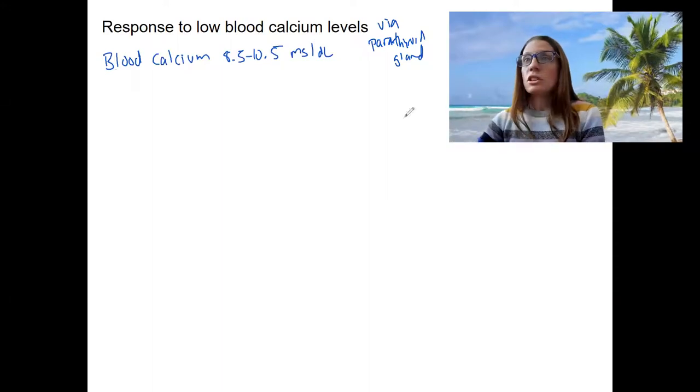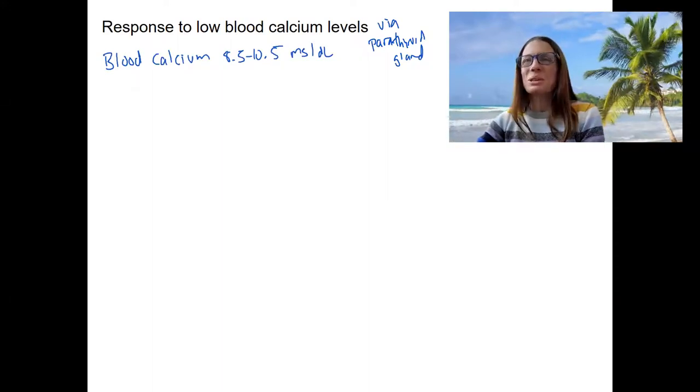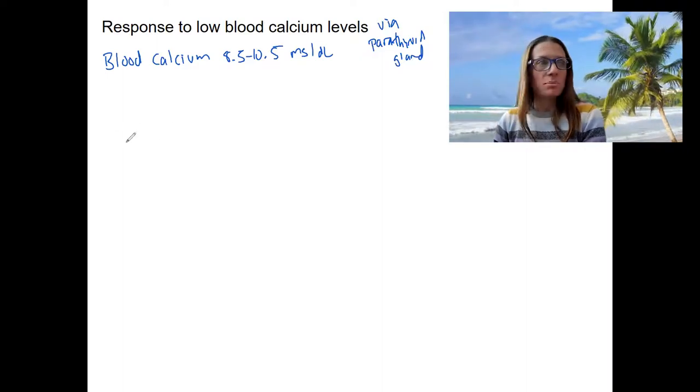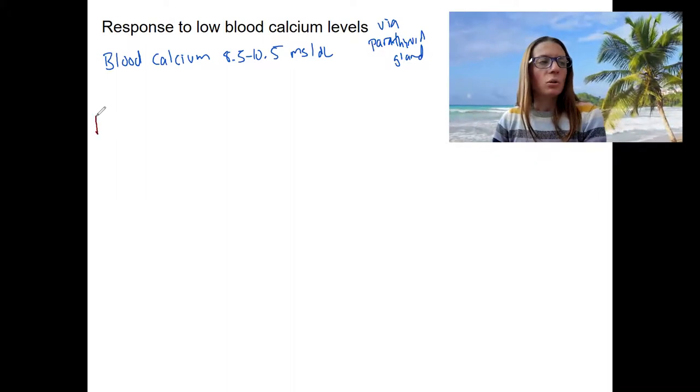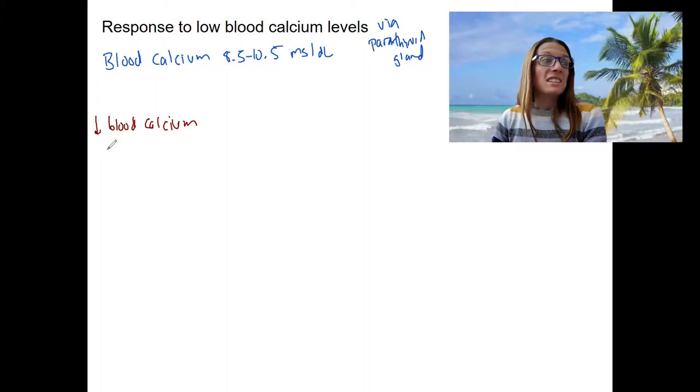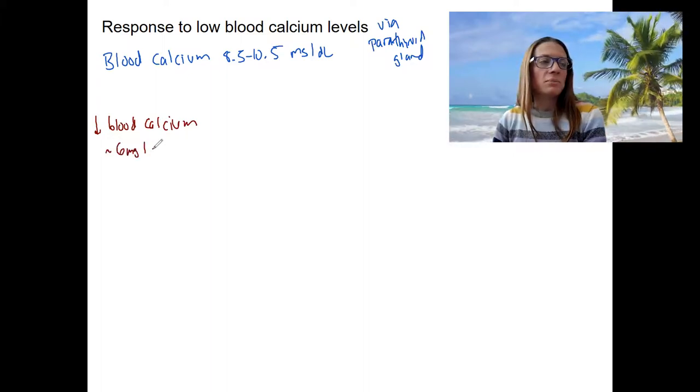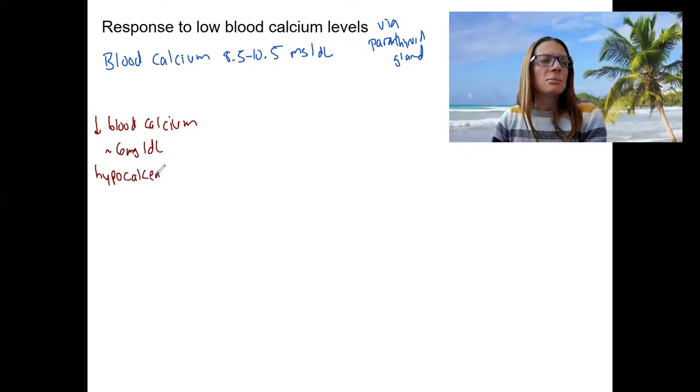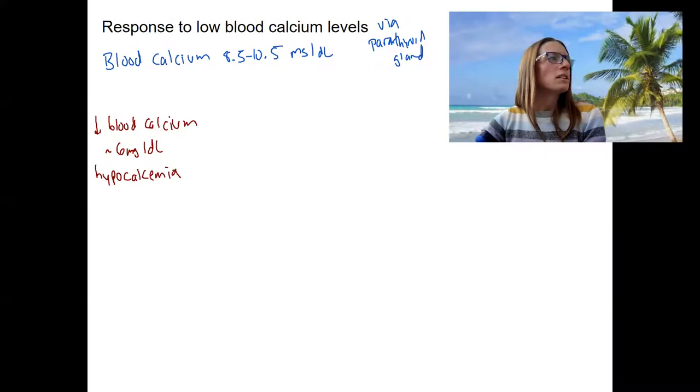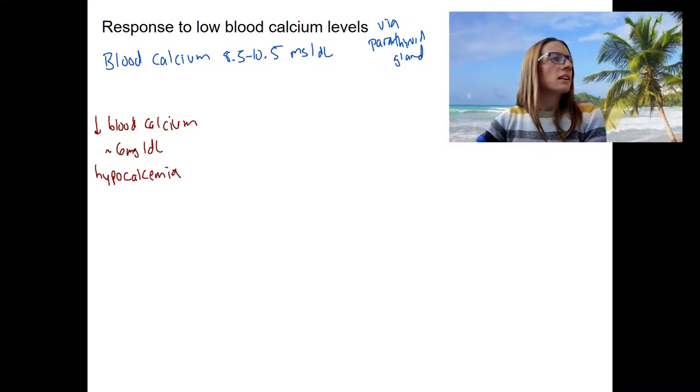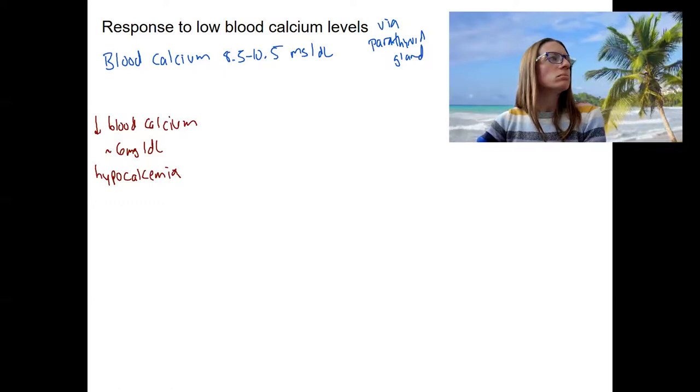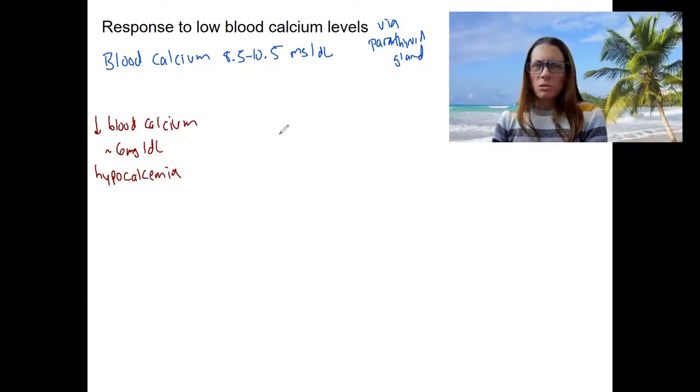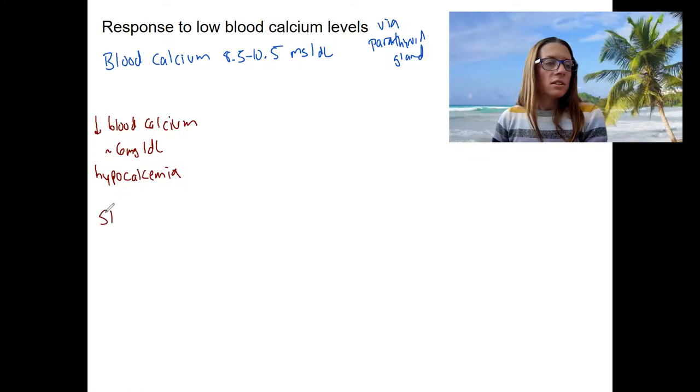So what is our stimulus to initiate parathyroid response? We are going to have low blood calcium. This is our stimulus. We could say this is maybe like six milligrams per deciliter. We could also call this hypocalcemia.